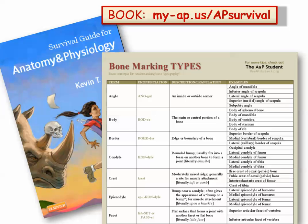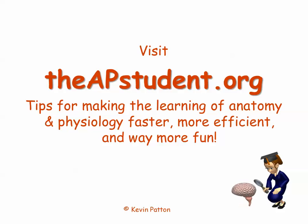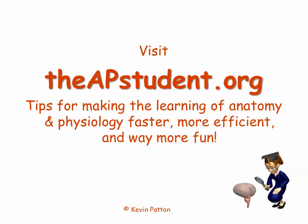Where can you find a list of these skeletal descriptive terms, their meanings, and examples of each one? One source is my survival guide for anatomy and physiology — you'll find a lot more shortcuts there too. Another place to look is my online web guide to human anatomy and physiology, where you can download a free list of these terms. For more videos, shortcuts, tips, and practical advice for learning human structure and function, visit theapstudent.org and sign up for the free newsletter.